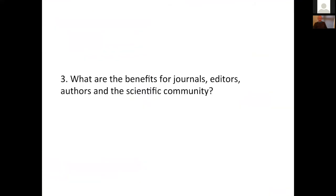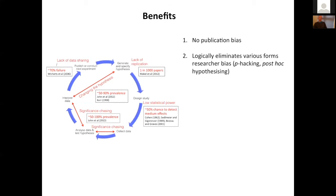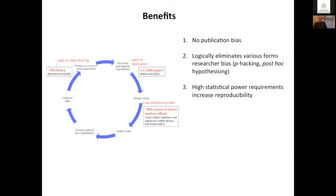I'll talk about the benefits for journals, editors, authors, and ultimately the scientific community. By eliminating publication bias, that takes out one big problem and should lead to a more balanced literature with a mixture of negative and positive findings. Because the format requires detailed specification of experimental procedures and analysis plans, it logically eliminates various forms of researcher bias such as p-hacking and post-hoc hypothesising or HARKing. By setting a high statistical power requirement, we can improve the reproducibility of all findings, whether positive or negative.